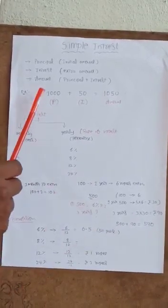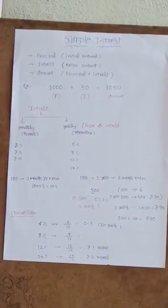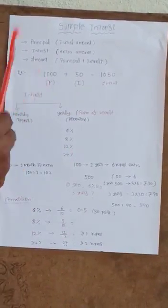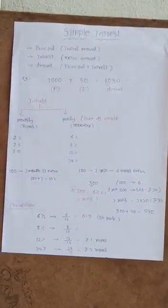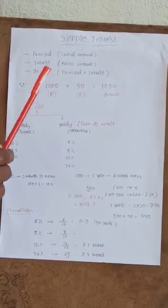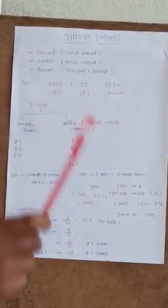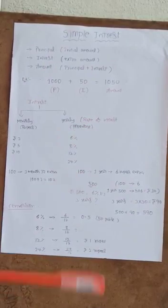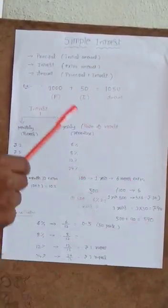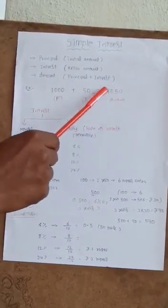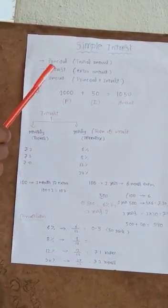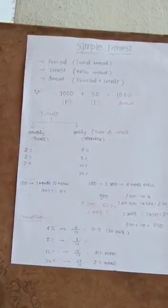I borrowed 1000 rupees from my friend, but the condition is I have to return 50 rupees extra. So the 1000 is the principal amount, the extra 50 rupees is the interest. Finally, I have to pay 1000 plus 50, which is 1050 rupees. Here, 1000 means initial amount, that is called principal. The extra 50 rupees is called interest. The total amount of 1000 plus 50 equals 1050, and this is called amount. Now we are clear about principal, interest, and amount.